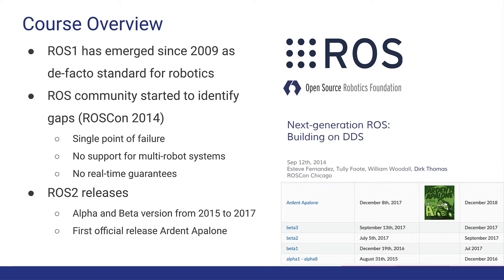In the ROSCon 2014 conference, the Open Source Robotics Foundation and the ROS community started to discuss and identify some gaps in ROS1, including the single point of failure with the ROS master node, the non-support of multi-robot systems as ROS1 was specifically designed for a single robot usage, and the non-support of real-time guarantees or quality of service profiles.